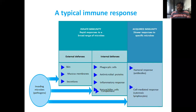Acquired immunity is a slower response but it is specific to microbes. There are two types of responses: first is the humoral response, and second is the cell-mediated response. The first is an antibody-mediated response and the second is a cytotoxic lymphocyte-mediated response.